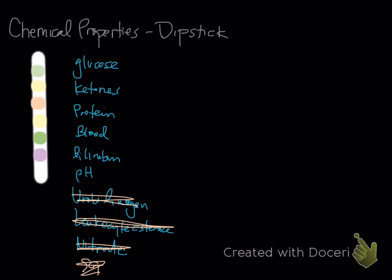Urobilinogen is not really something we're going to talk about. We'll talk about it later when we talk about liver. These are the main tests that we're going to focus on: glucose, ketones, protein, blood, bilirubin, and pH.